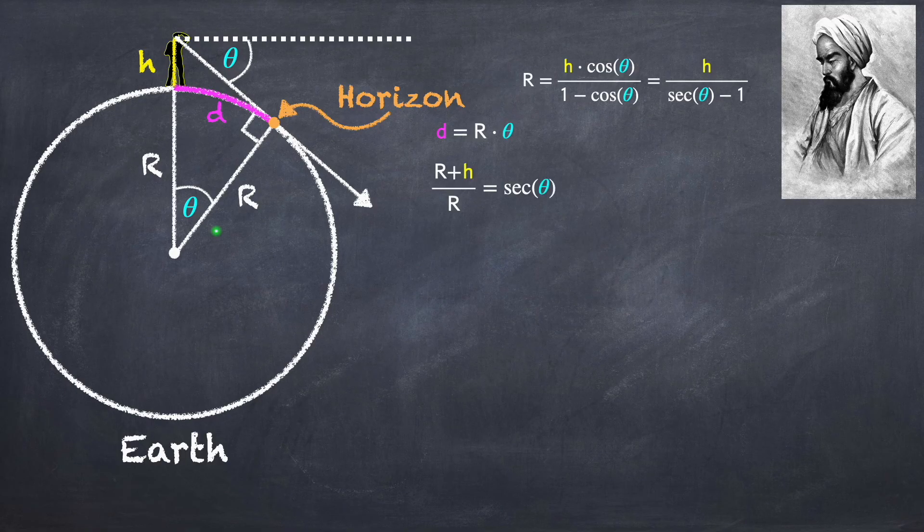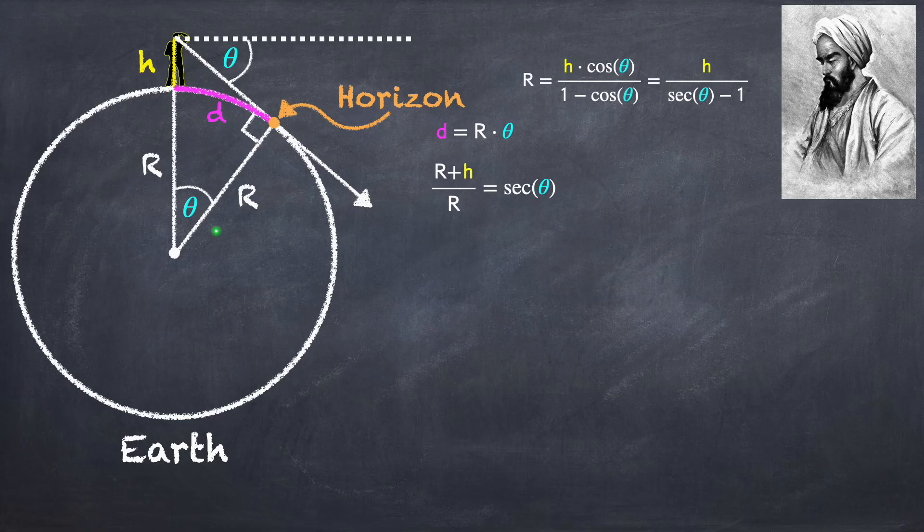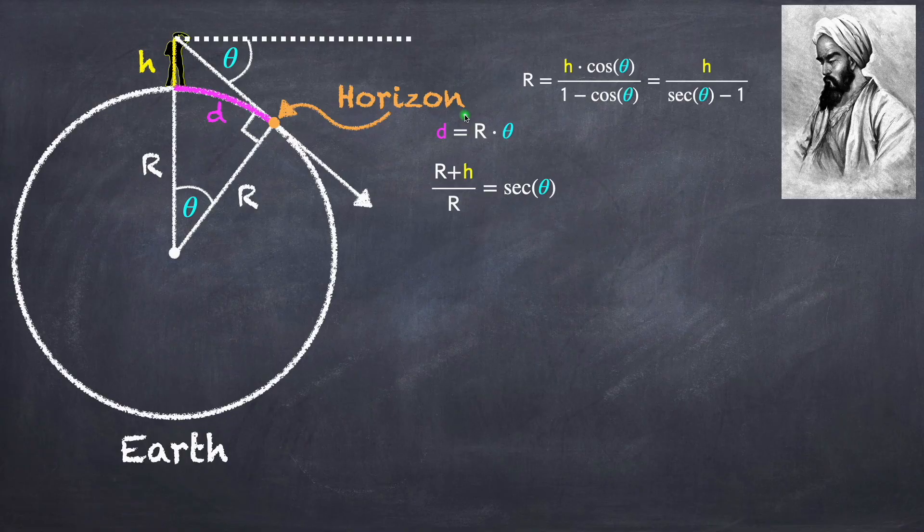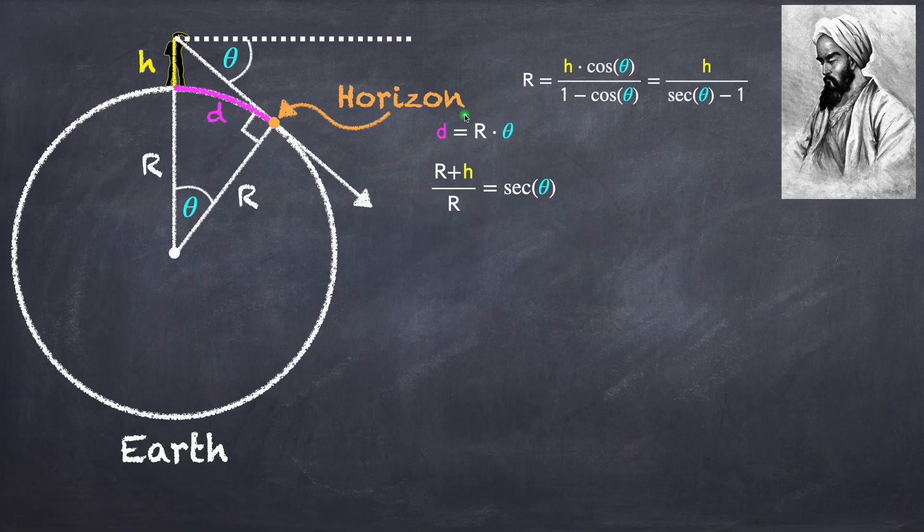At this point, you could just plug r and h into a calculator and solve for theta, and then plug that back into our distance formula. But what fun is it to plug into a calculator? So let's try to solve this without a calculator.